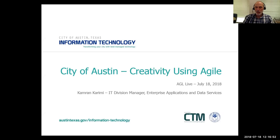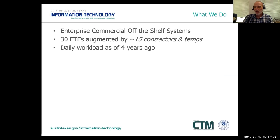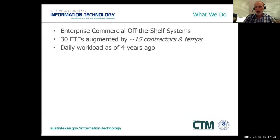I'm Kamron Karimi, IT Division Manager for Enterprise Applications and Data Services at the City of Austin. We started our agile journey about four years ago. My team supports enterprise commercial off-the-shelf systems — case management, asset management, business intelligence, document management, and the city's enterprise service bus and databases. Within my division today we have about 30 full-time employees augmented by about 15 contractors, a number that has grown because we've been successful and people have been willing to invest.